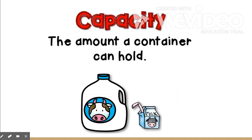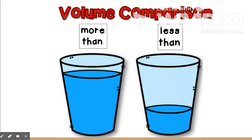Volume can look like the amount of space something takes up, just like milk in a gallon container or a milk carton. One math word for how much something holds is capacity. When we're talking about volume and comparing it, we use the same words as before: more than and less than.